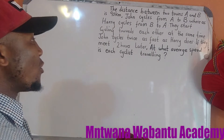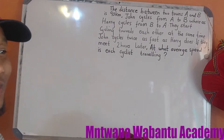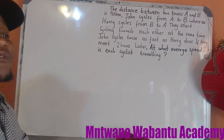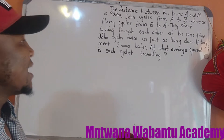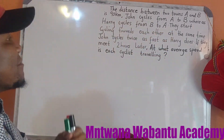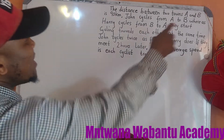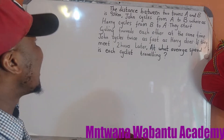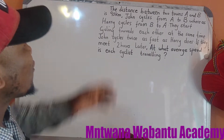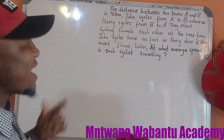What's up, it's your boy again. Let's go straight into the question. The question says the distance between two towns — let's say town A is Timbuktu, one of the ancient cities in Africa, Mali, and town B is Benin City, one of the ancient cities in Nigeria. The distance between these two towns is 90 kilometers — that's an assumption, just for this problem.